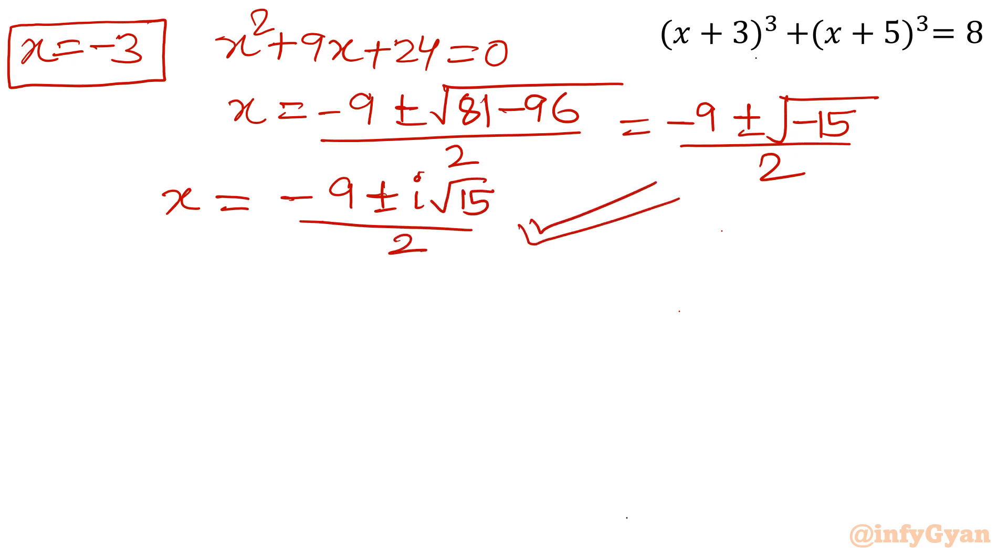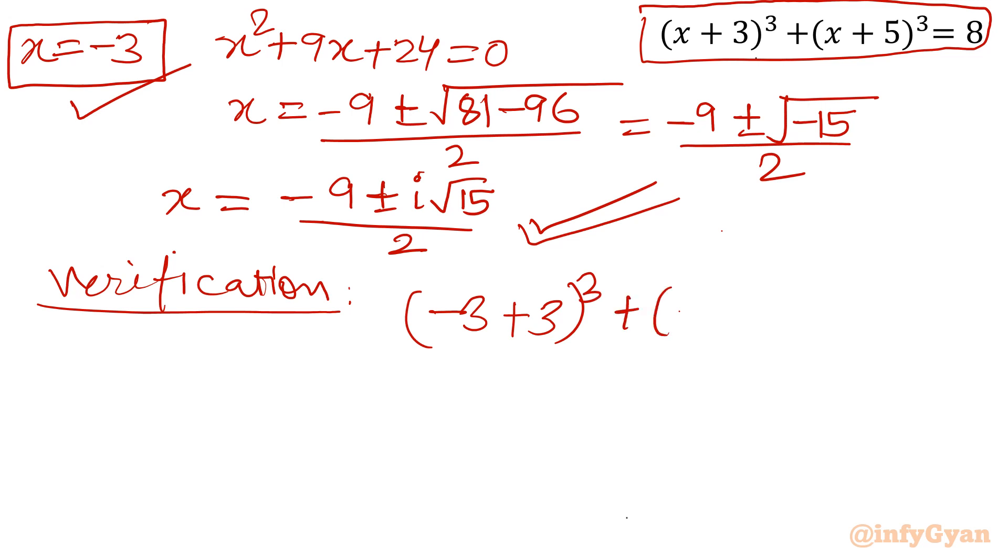So it is minus 9 plus minus i times root 15 over 2. These two solutions are complex. And this one is real. So our real solution is minus 3. Let's verify. So I will write minus 3 plus 3 whole cube plus minus 3 plus 5 whole cube. So it is 0 plus 2 cube, which is your RHS 8. So our real solution is x equal to negative 3.